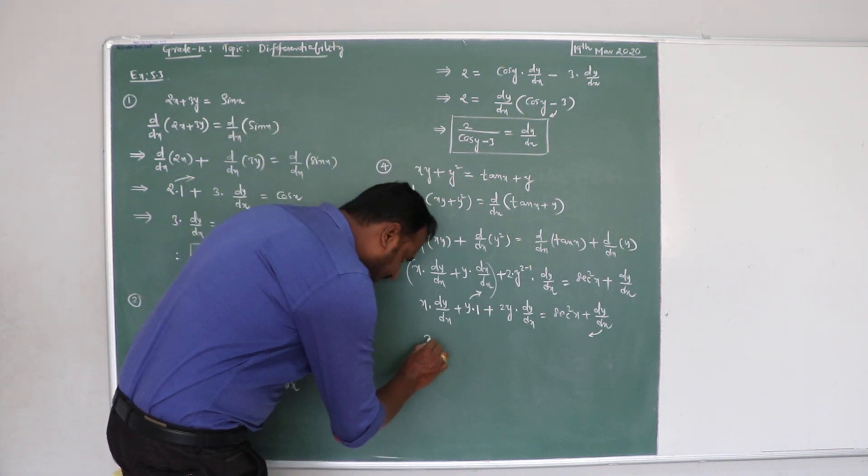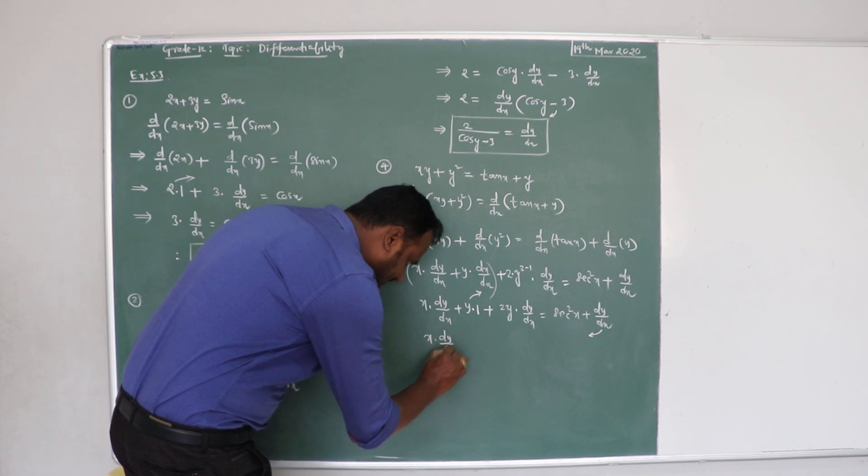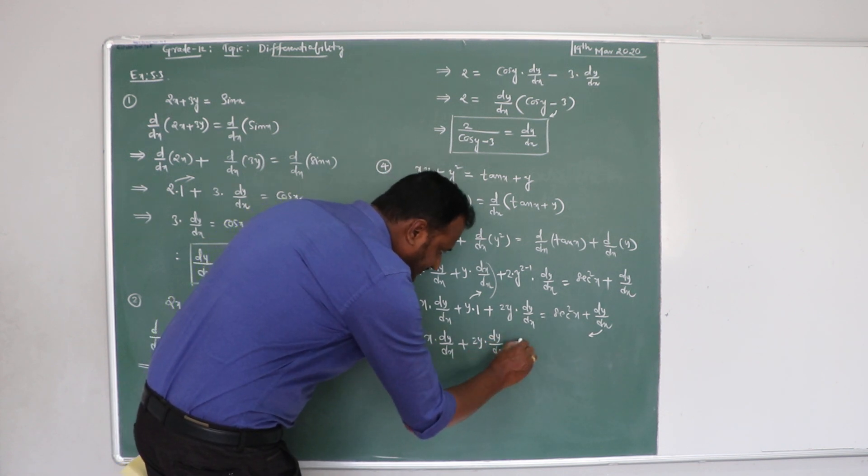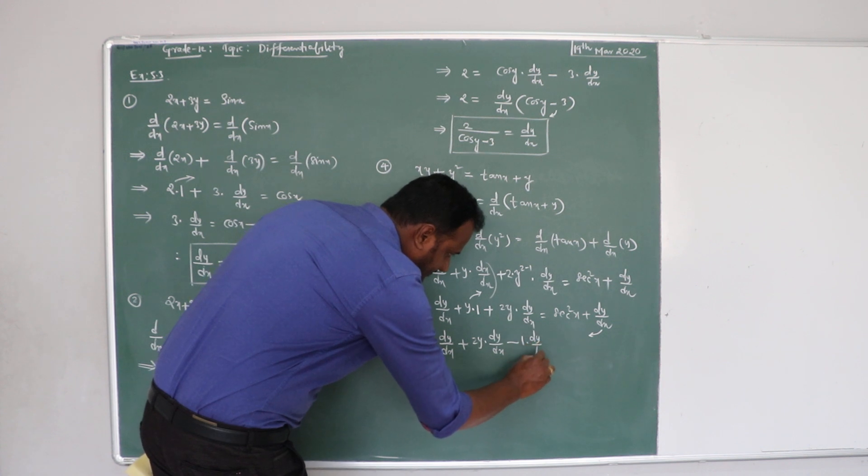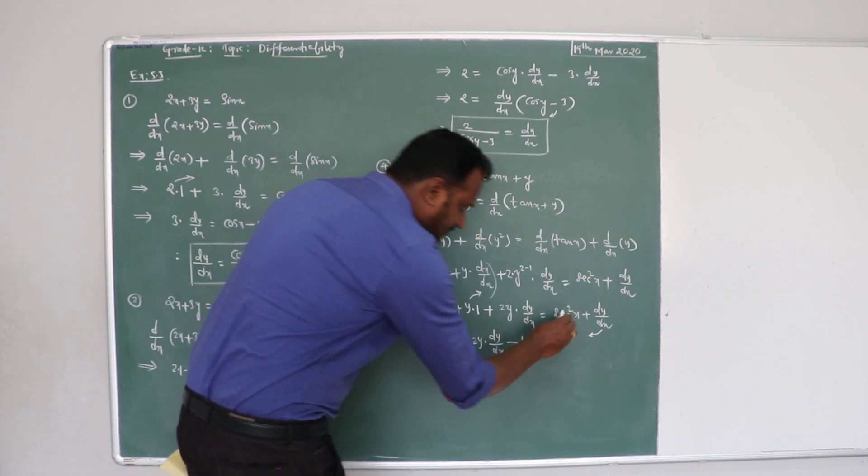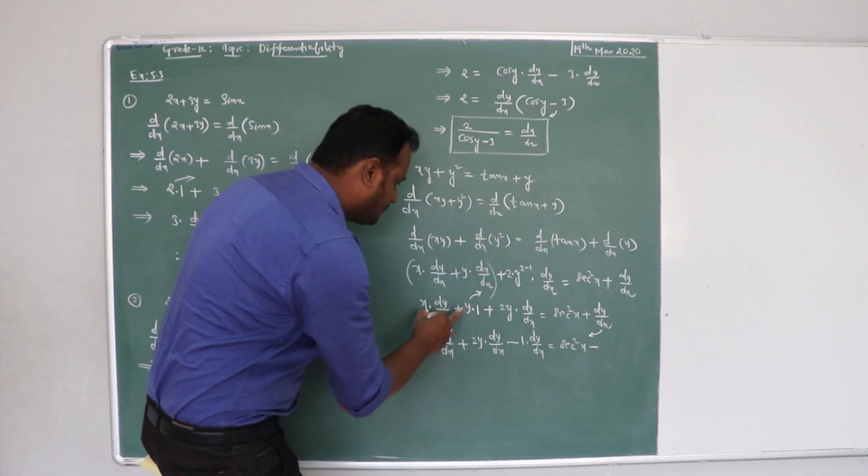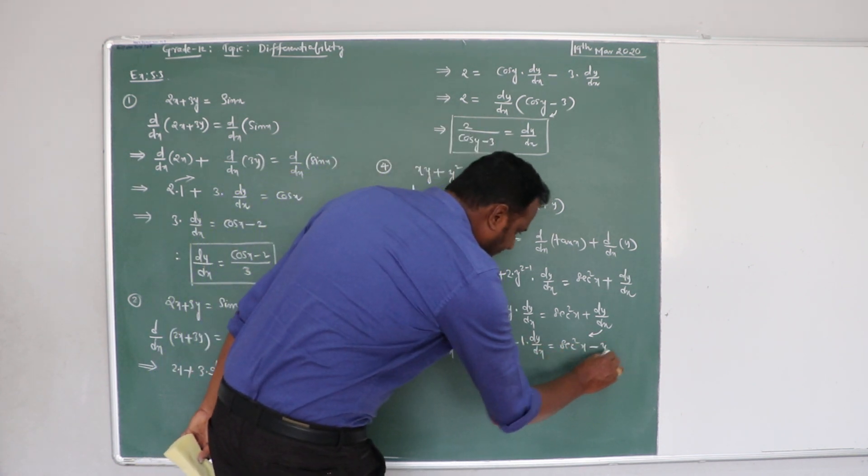Then it is x into dy by dx, and plus 2y into dy by dx, that is minus 1 into dy by dx is equal to secant square x minus y.